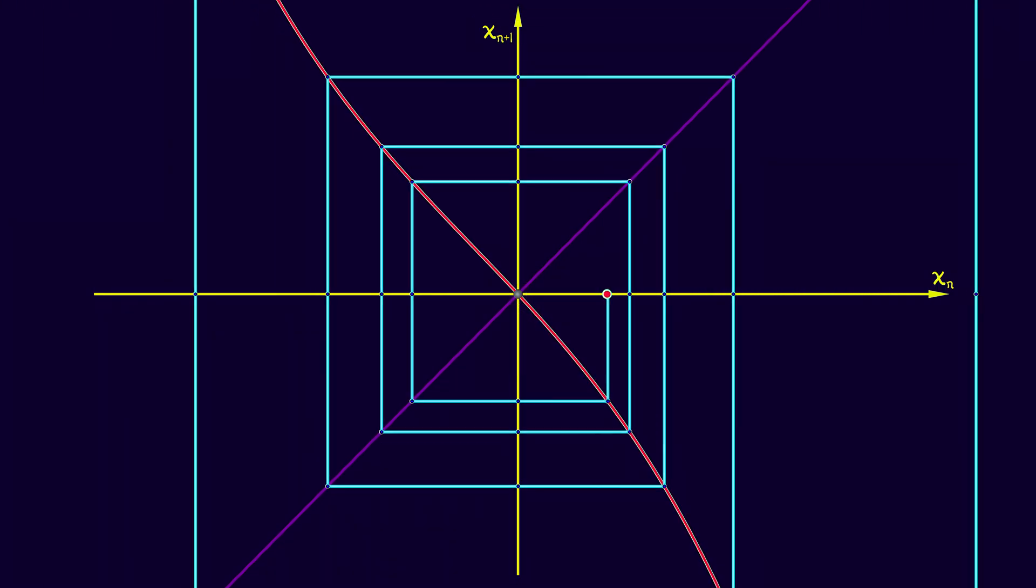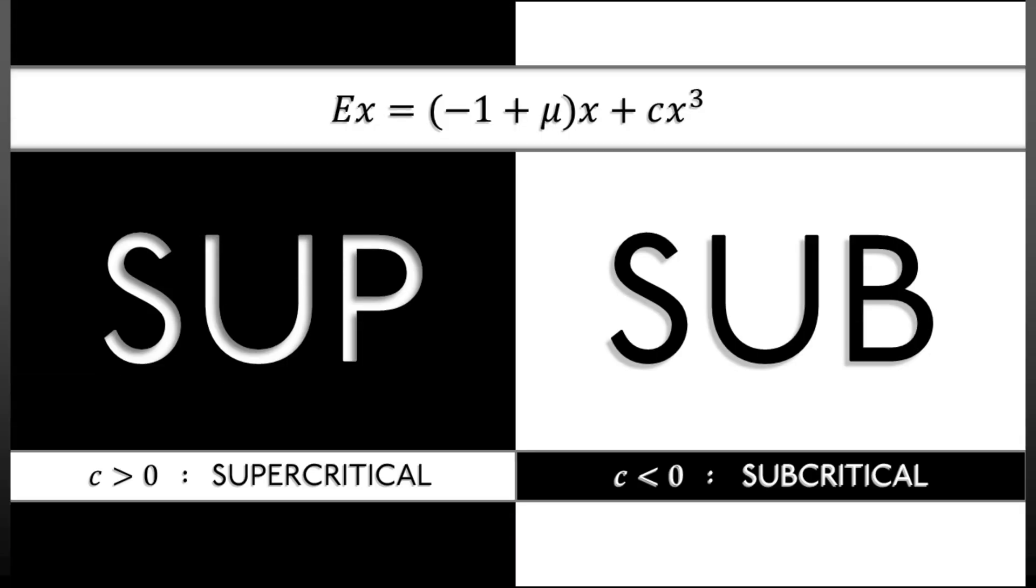But there is a little something worth noticing. And that is as with the pitchfork, the dependence on the constant c. When c is positive, we have what is called a supercritical period doubling bifurcation. That's the one that we've just illustrated.